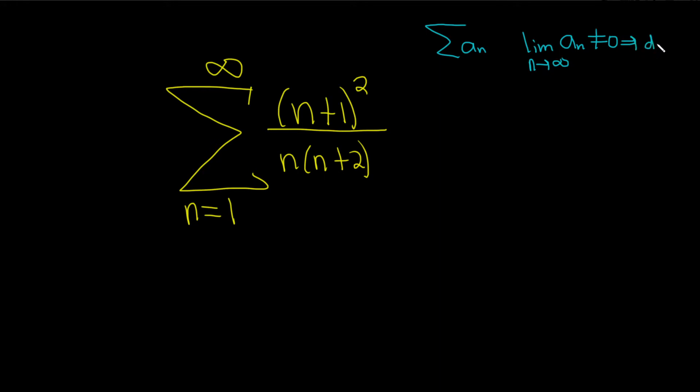And this is really powerful. This is called the nth term test. So, the nth term test says whenever you have an infinite sum, and you take this limit and you don't get 0, you get divergence, always.